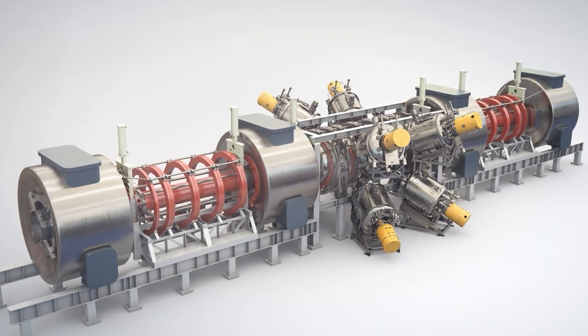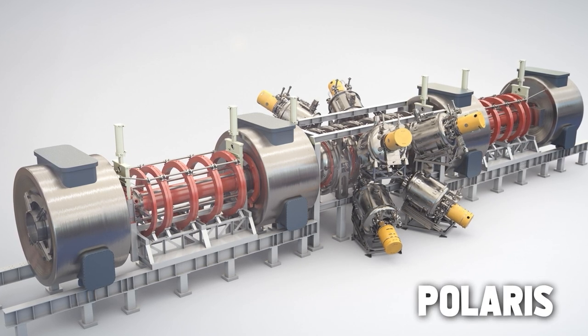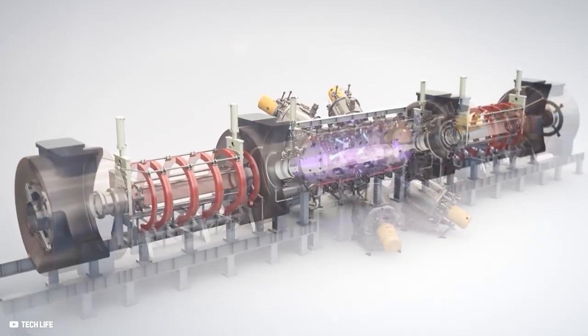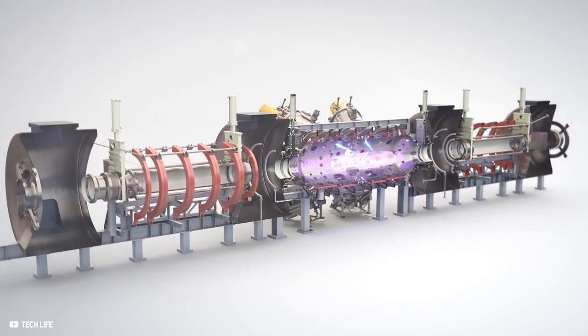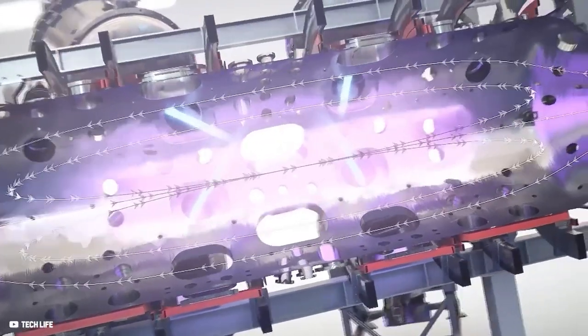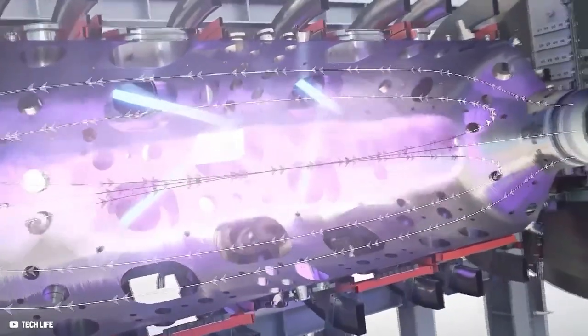Helion is currently building its seventh generation fusion machine named Polaris, which aims to increase the pulse rate from one pulse every 10 minutes to one pulse per second and produce electricity by 2024.